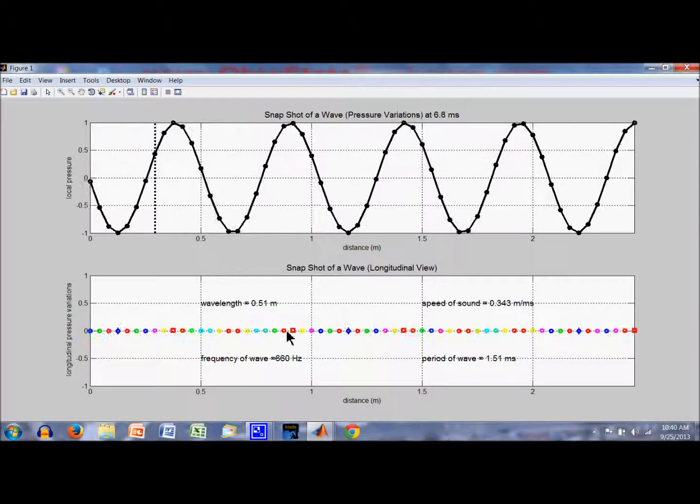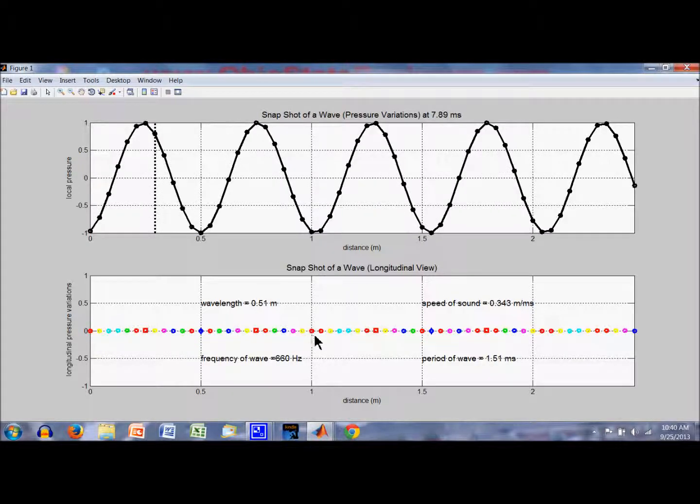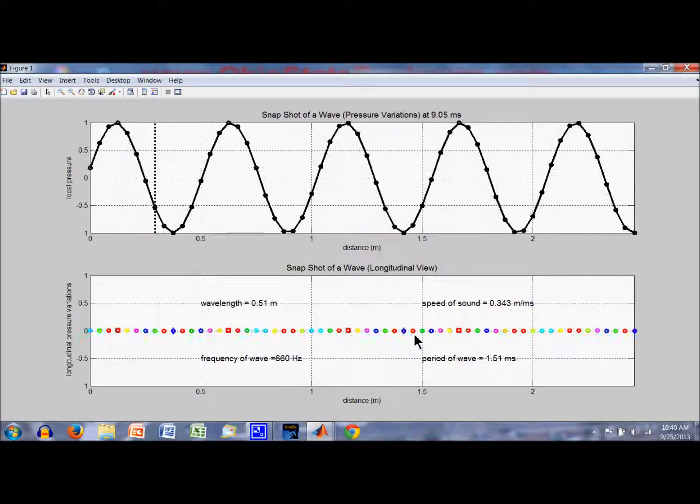Here you can see the point of compression moving. Here is the point of rarefaction moving across. And it is moving along the axis of propagation.